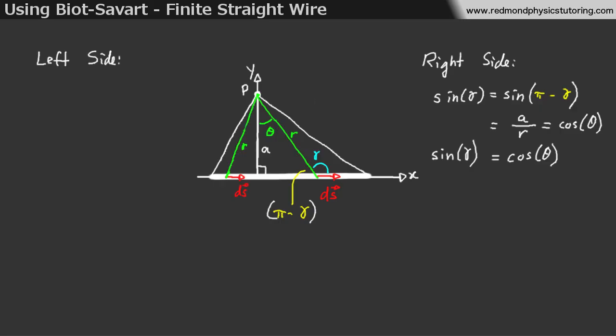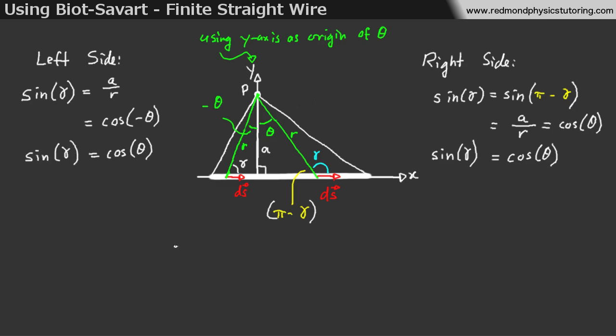If we look at the left side, we'll see the same thing. Sine of gamma, in this case we don't need to consider pi minus gamma, but sine of gamma is equal to a over r is equal to cos of negative theta, and here we have negative theta, but the cosine of negative x is equal to cosine of x, so again we have a over r is equal to cos of theta, and then sine of gamma is equal to cos theta. So, in both cases we get sine of gamma is cos theta.